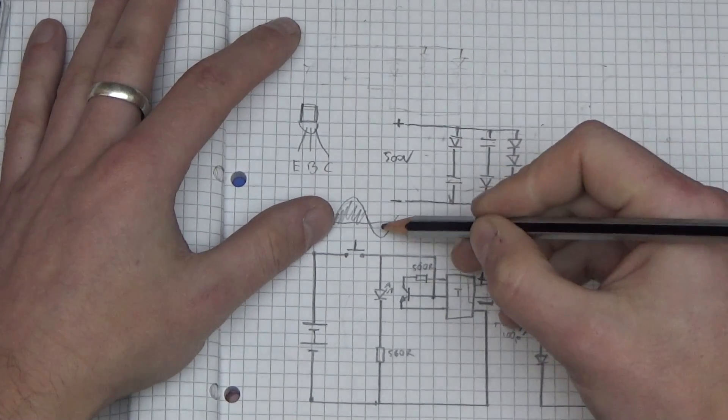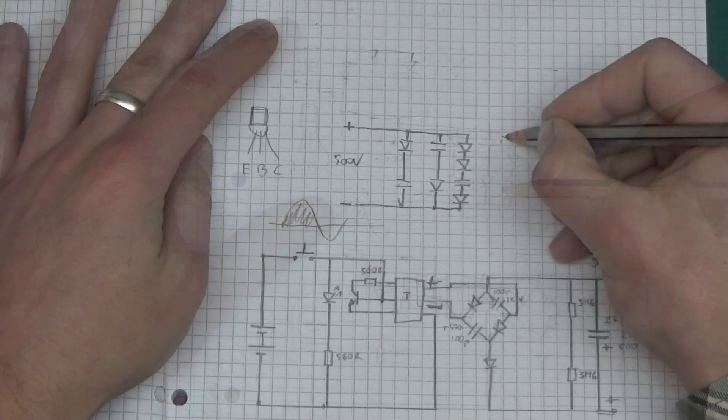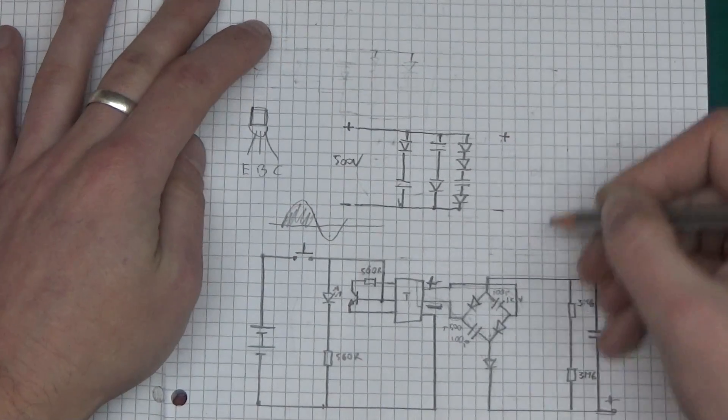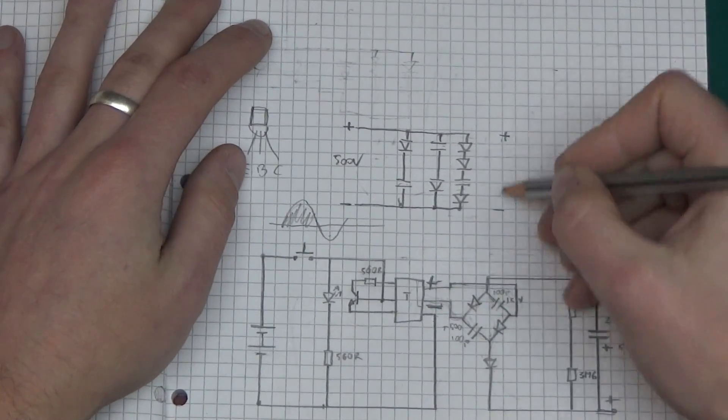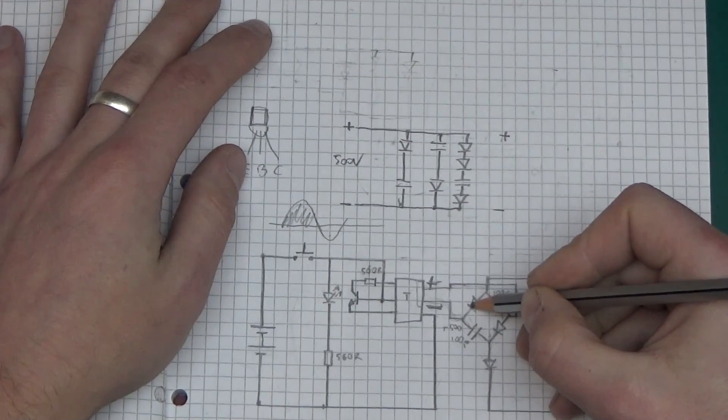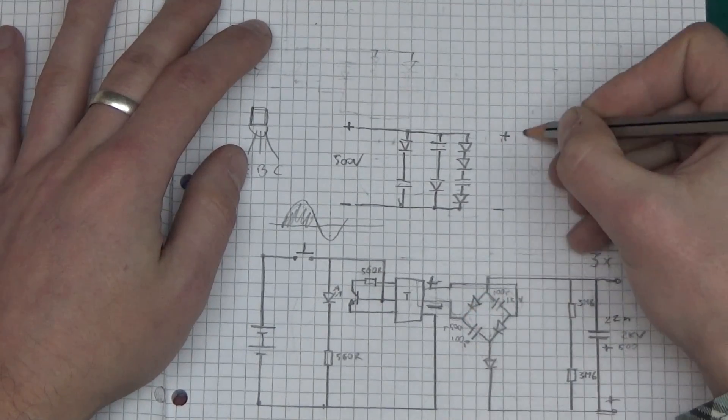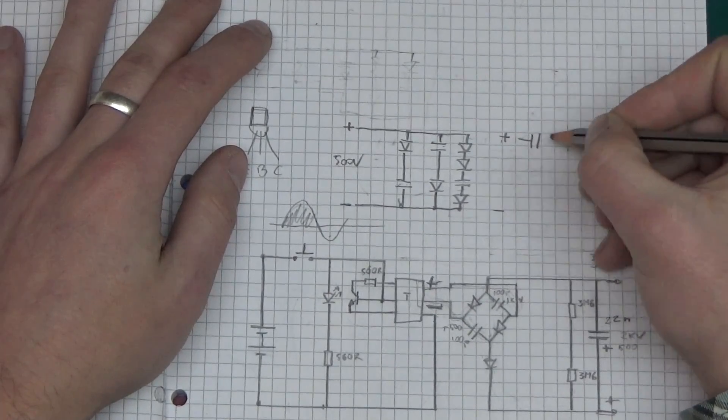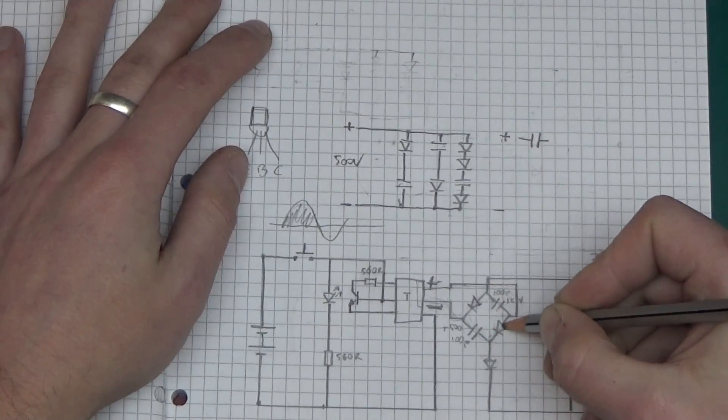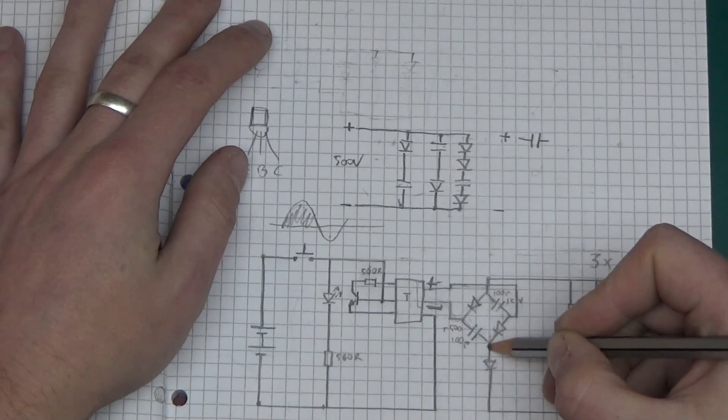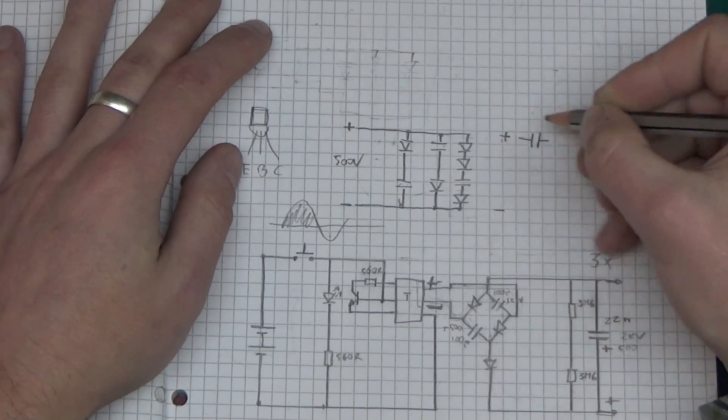What happens during this part of the cycle? Positive here and negative here, but this time let's start going from this part. The current cannot go this way because there's a diode, so there's only one path through here. The current will go through a cap, then it cannot go here because the diode will be reverse biased, so it will forward bias this diode.